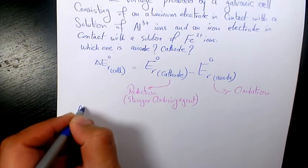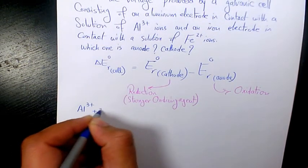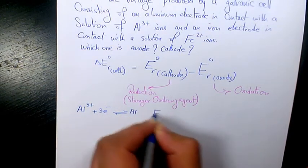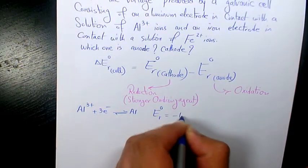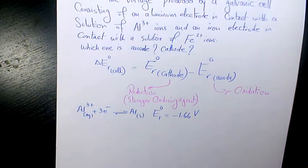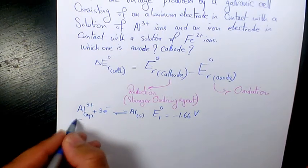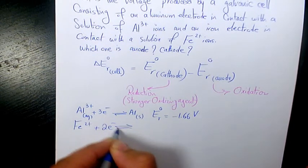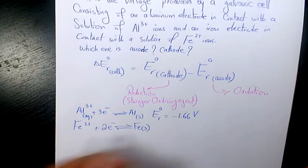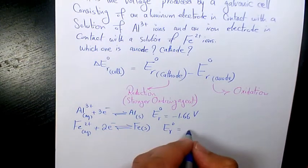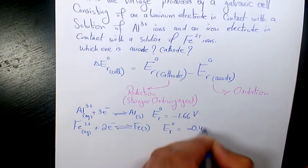For aluminum, it's going to be Al³⁺ plus three electrons gives me Al solid, and that is negative 1.66 volts. This one is in solid, this one in aqueous solution. For the other one, we have Fe²⁺ plus two electrons, that's going to be Fe solid, and the standard reduction potential is negative 0.44 volts.